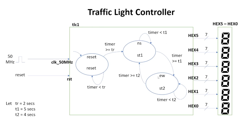NS and EW — north-south and east-west. In the NS state, cars coming from the north and from the south are probably both being given green lights. For the east-west direction, those coming from the east and those from the west are probably also being given green lights. In this case, I'm not focusing too much on the actual physical scenario.